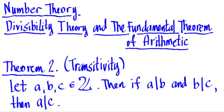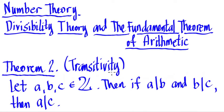Folks, in this another video in number theory, we're still in this module — divisibility theory in the fundamental theorem of arithmetic. We're going to tackle now theorem number two. This is right after theorem number one. We're going to name this theorem two because we're going to use this in future videos. And theorem two is actually transitivity, or the transitive property. So let's state it formally: the transitive property in divisibility theory.